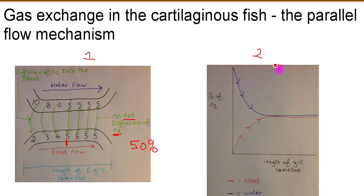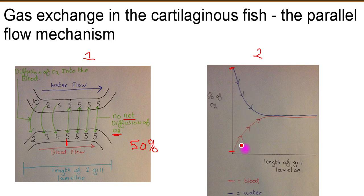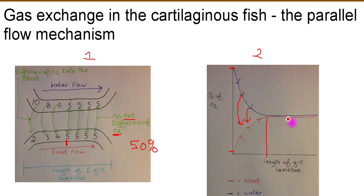Looking at graph diagram two for parallel flow: right at the very start of the gill lamella there's a very steep diffusion gradient — about 100 percent for the water and about two percent oxygen in the blood. As the blood and water flow across the gill lamella in the same direction, gas exchange occurs, but eventually about halfway across the gill lamella no further diffusion occurs. This flat line represents about 50 percent saturation of the fish's blood — that is the parallel flow mechanism, which happens in cartilaginous fish like sharks.